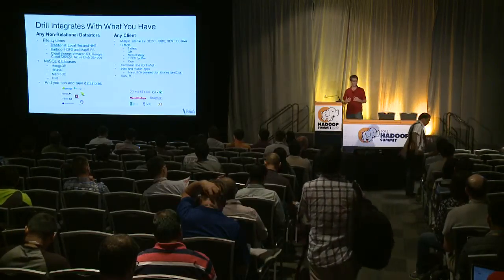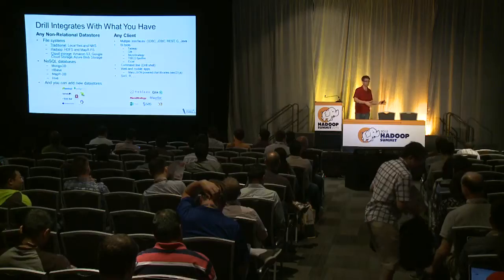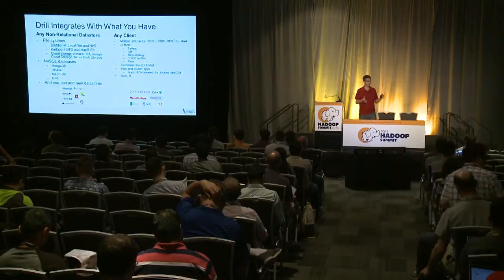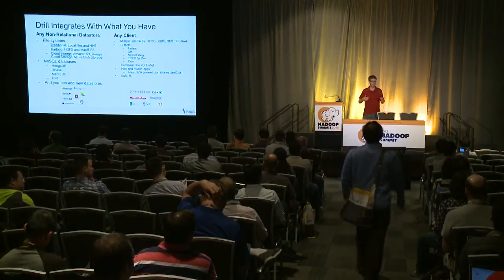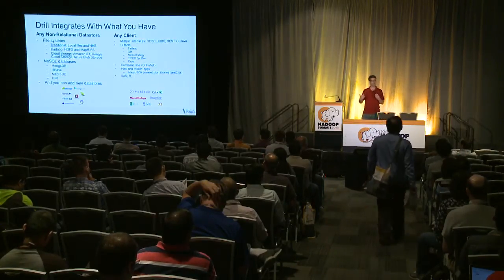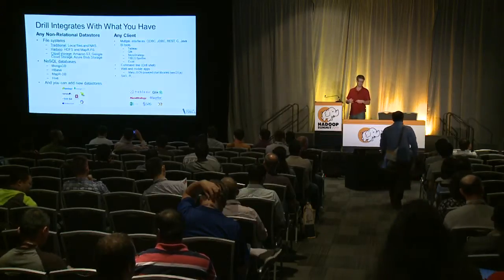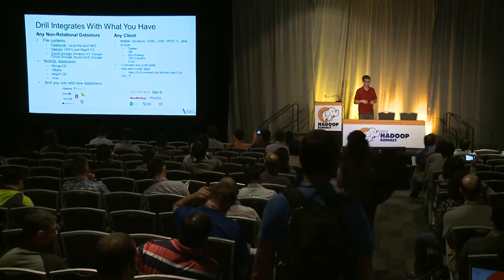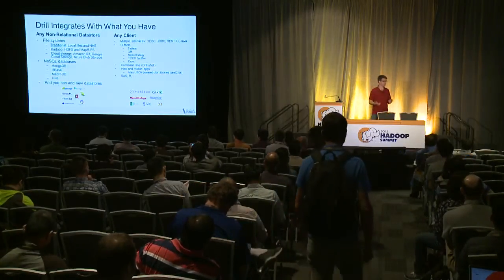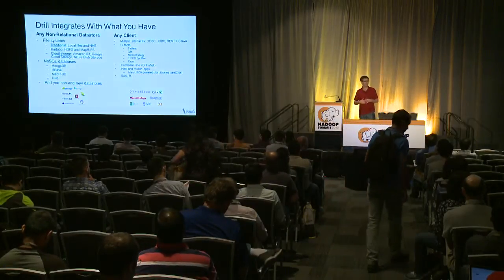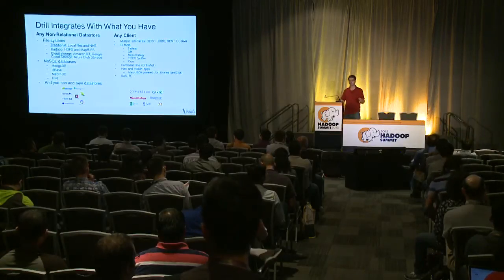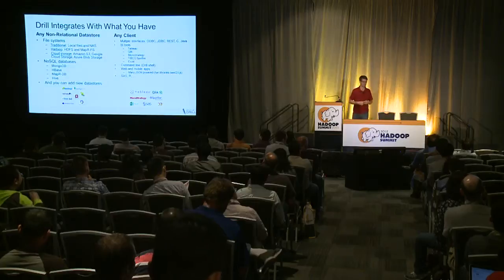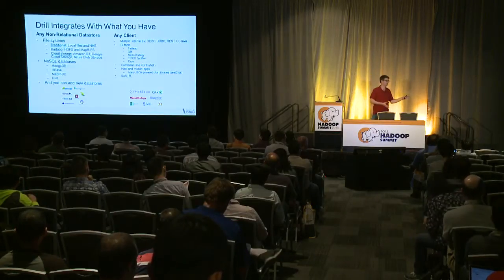Any non-relational data store should be available, accessible using standard SQL interfaces. That means file systems — local, NAS, Hadoop HDFS, MapR file system — but also cloud storage like Amazon S3 and Azure Blob. There are also huge amounts of NoSQL databases. Drill already supports a bunch out of the box and is working with those communities to add support for additional systems. You need to be able to access your data wherever it is.